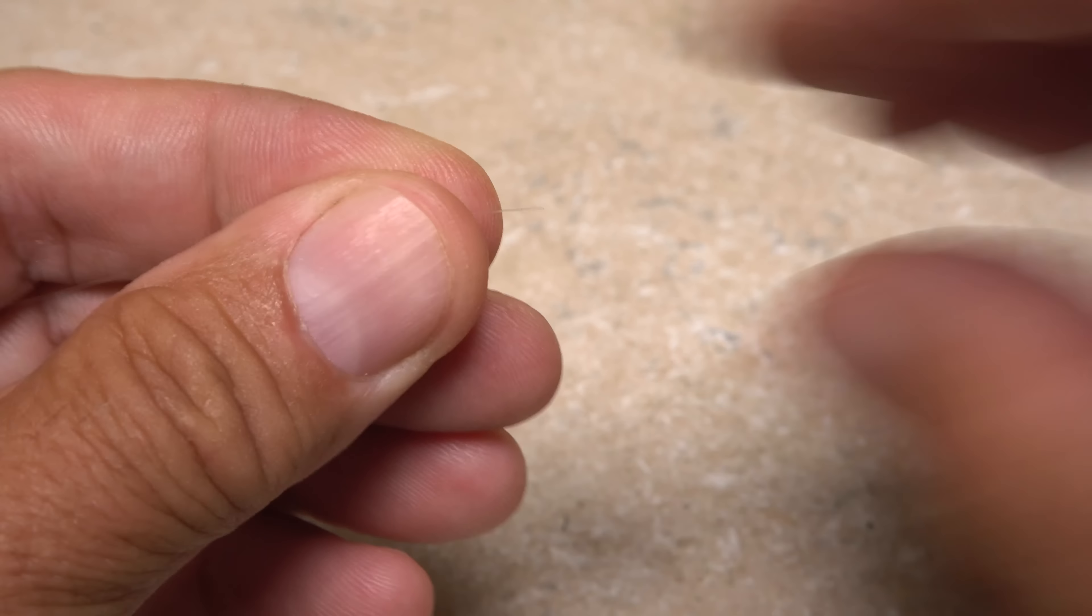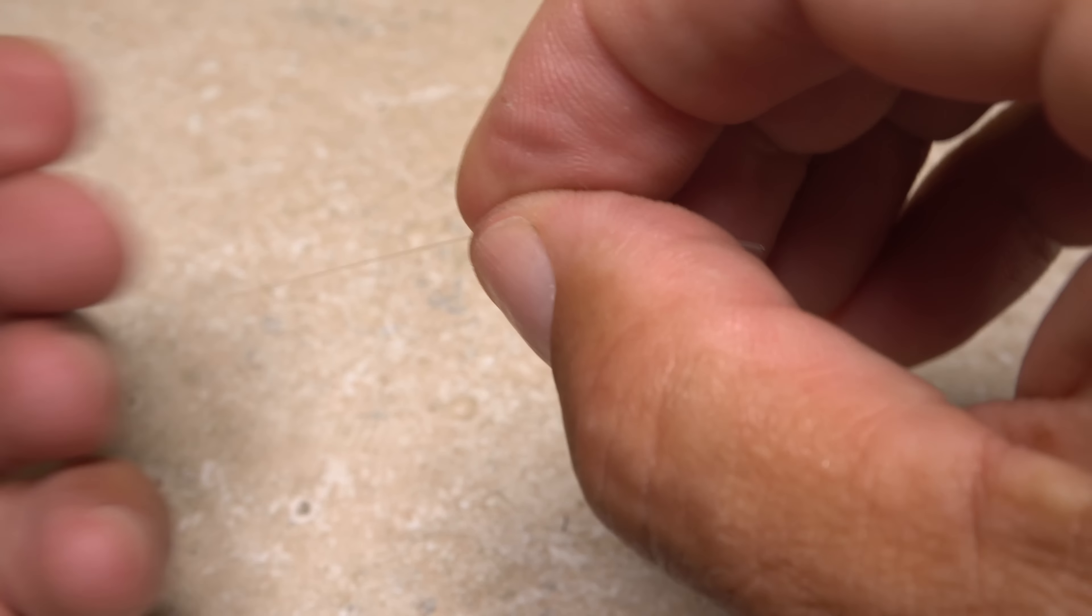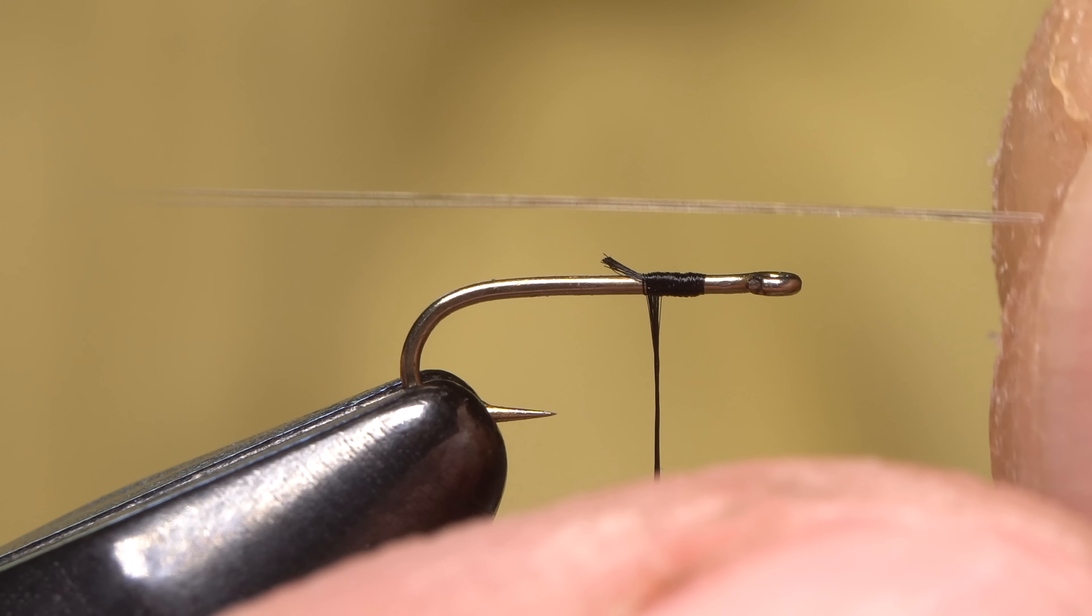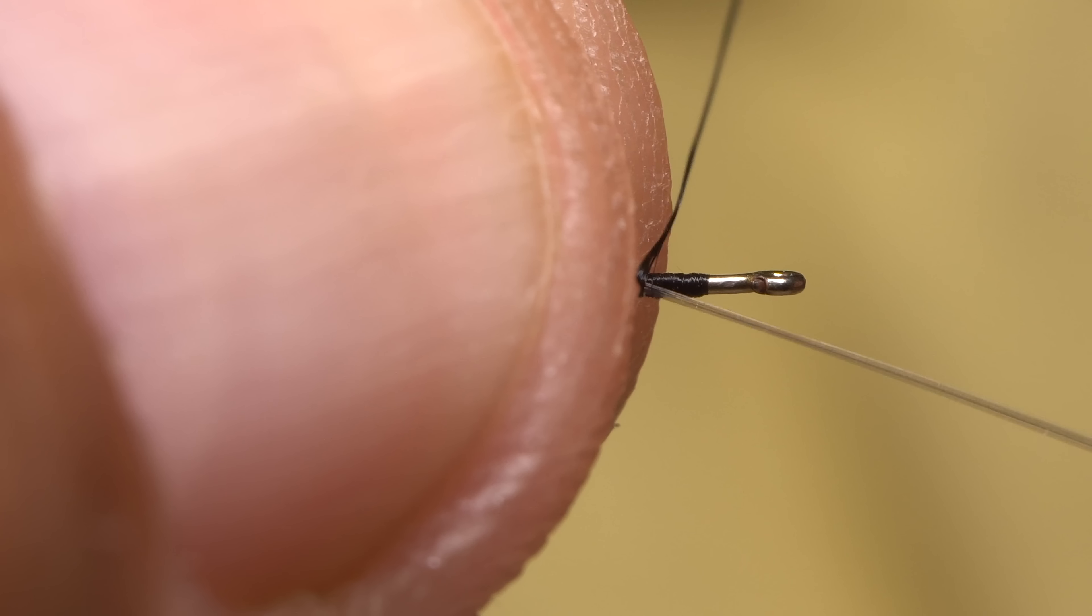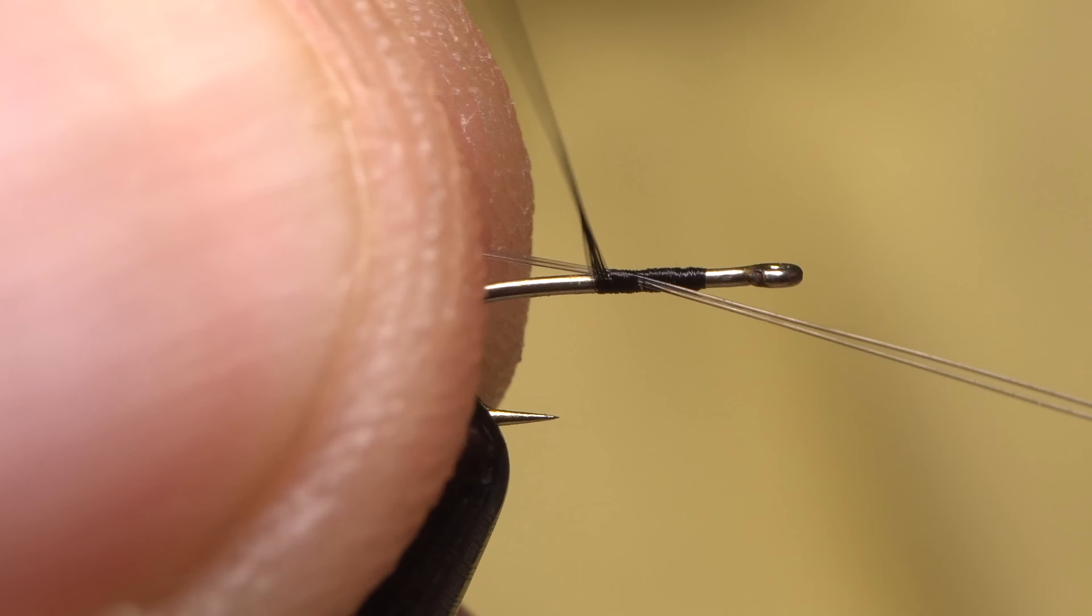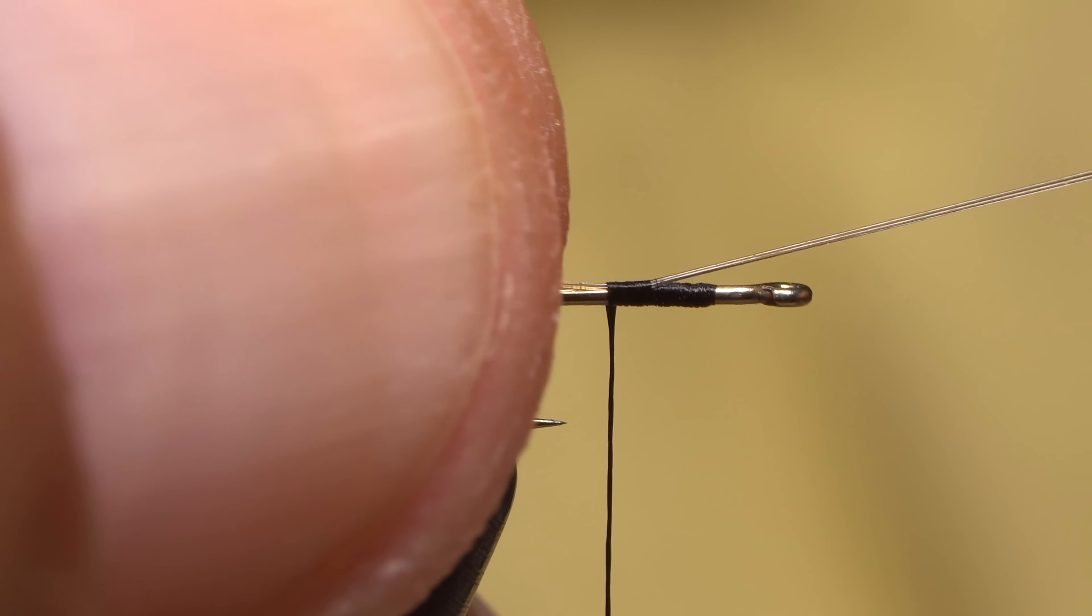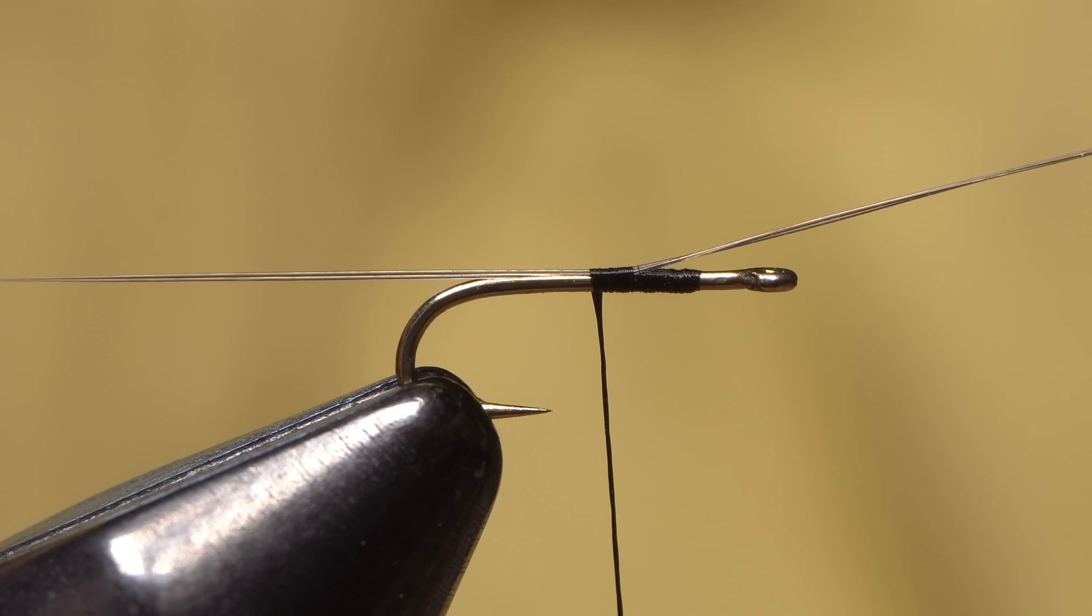Medium gray microfibits are used for the tail of the fly. Separate two from the clump and while keeping their tips aligned, strip them free. Measure to form a tail about a hook shank in length, then secure the microfibits to the hook shank with wraps of tying thread.